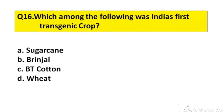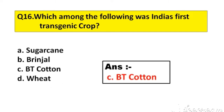Question number 16. Which among the following was India's first transgenic crop? Option A: Sugarcane. B: Brinjal. C: BT Cotton. D: Wheat. The right answer is option C, BT Cotton.